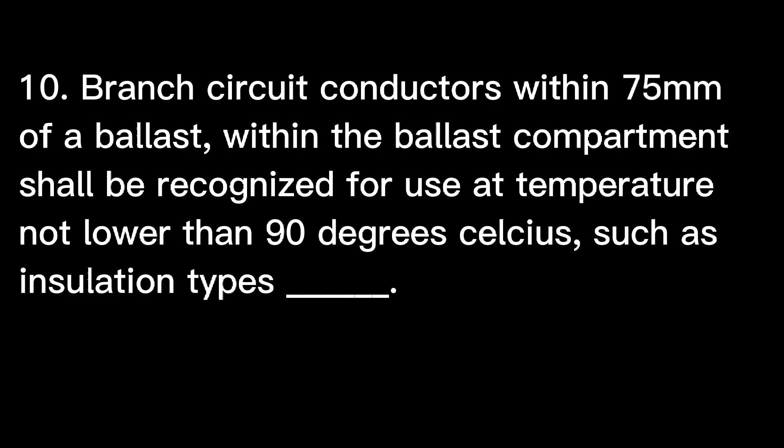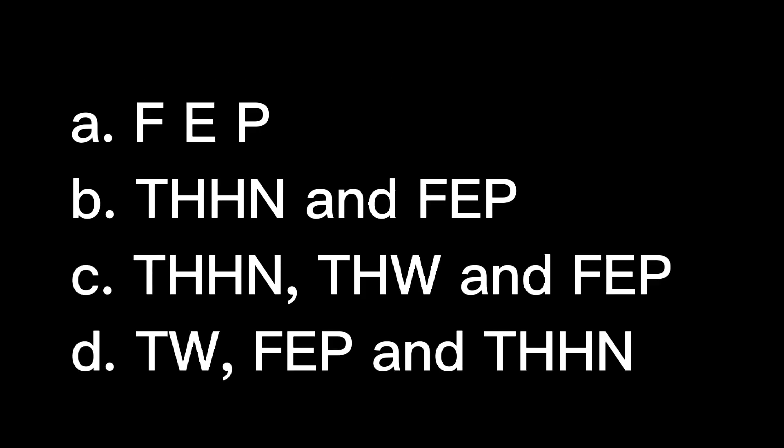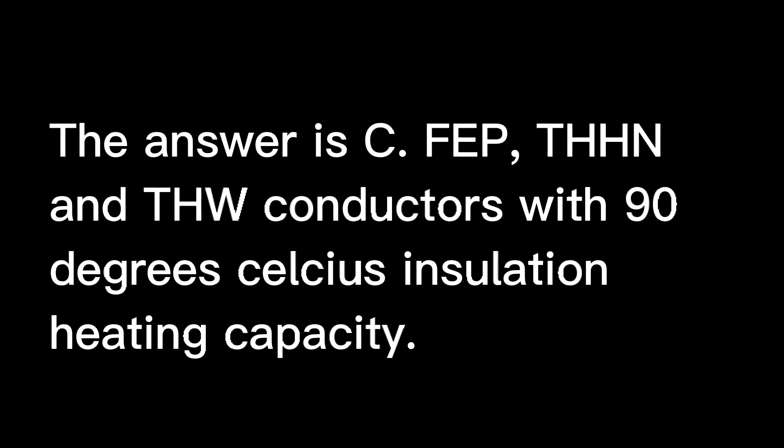Question 10: Branch circuit conductors within 75 mm of a ballast within the ballast compartment shall be recognized for use at temperature not lower than 90 degrees Celsius, such as insulation types: A. FEP, B. THHN and FEP, C. THHN, THW and FEP, D. TW, FEP and THHN. The answer is C. FEP, THHN, and THW conductors with 90 degrees Celsius insulation heating capacity.